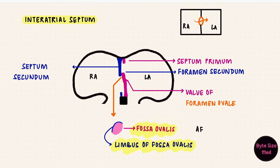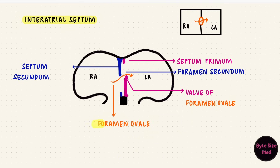But all of that is after birth. For now, there's a passage between the two atria. So now we've successfully formed an interatrial septum.